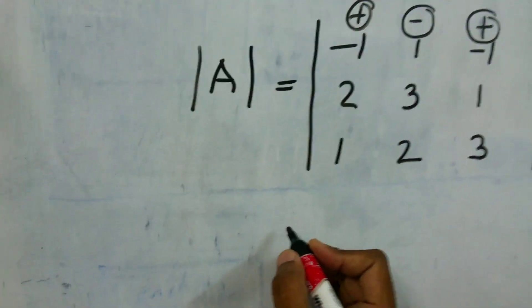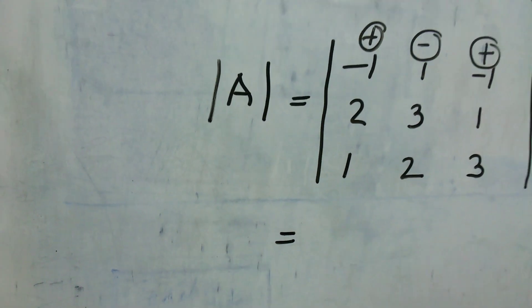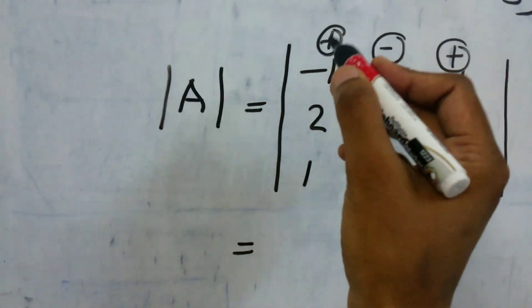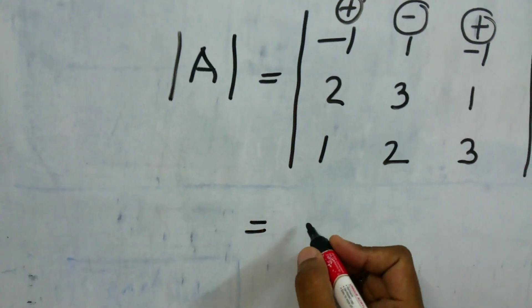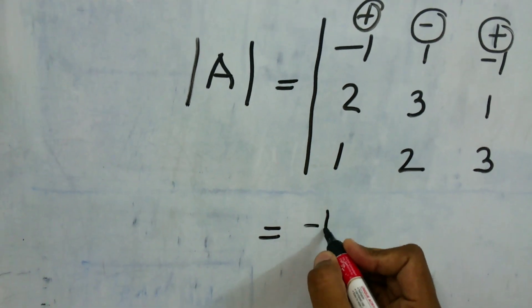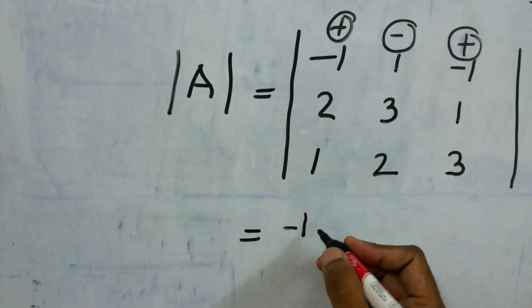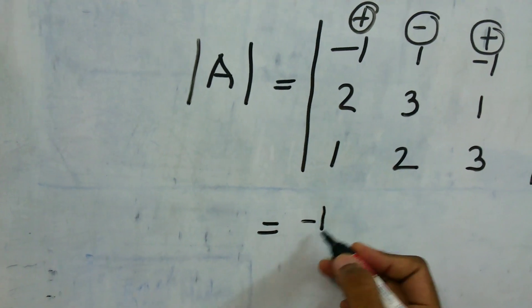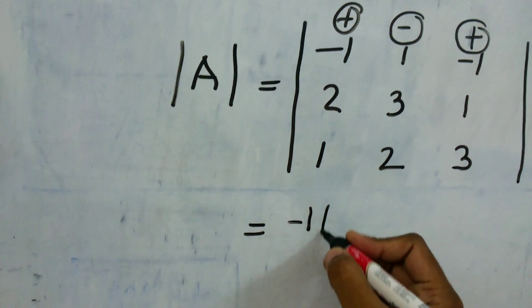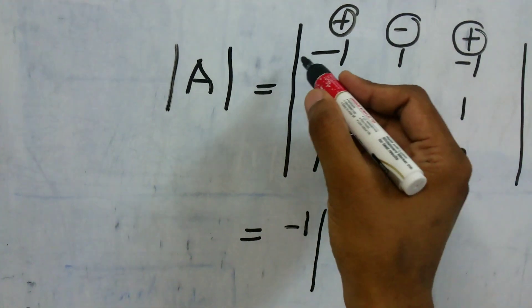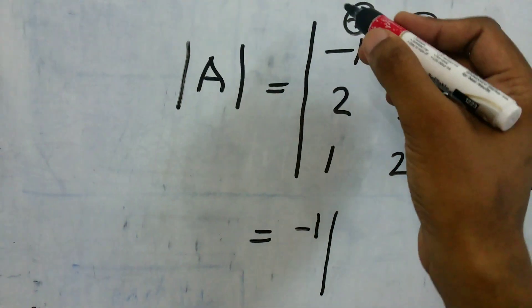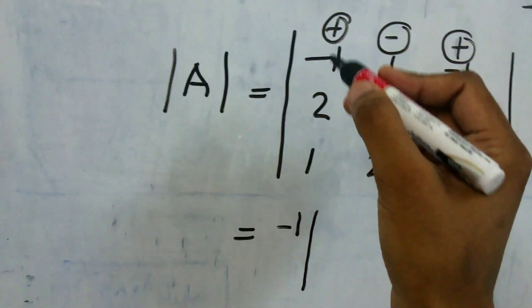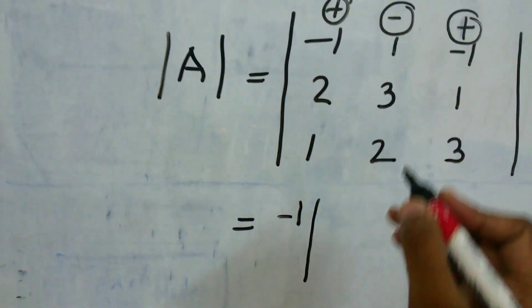Let us understand. So here once I start solving this, I will consider this as positive. Now starting with minus 1, because this positive means it will not have any effect on the sign of this particular element. Then whatever is in that particular row and that particular column we need to hide or forget for some time and then we need to take the remaining elements.